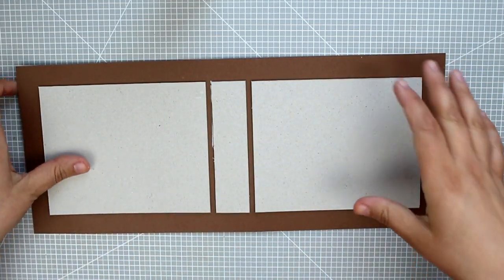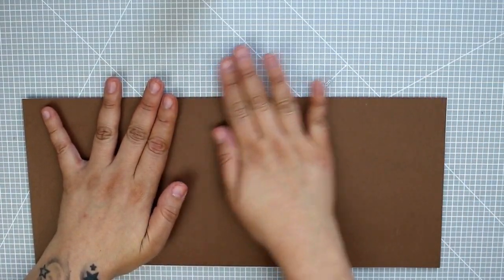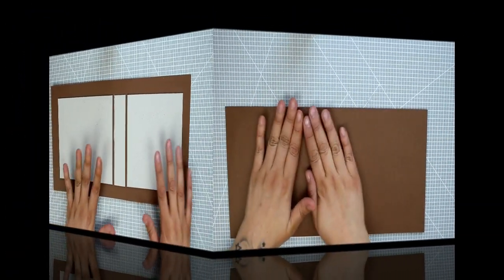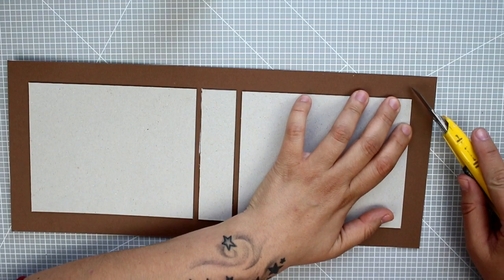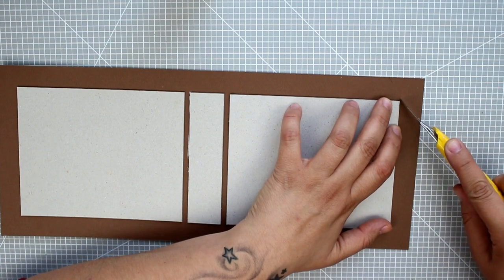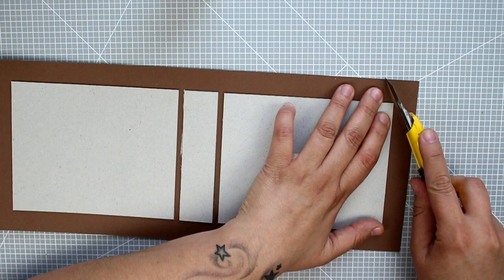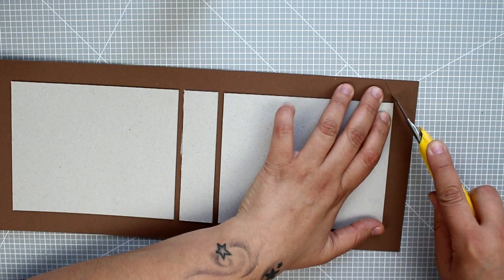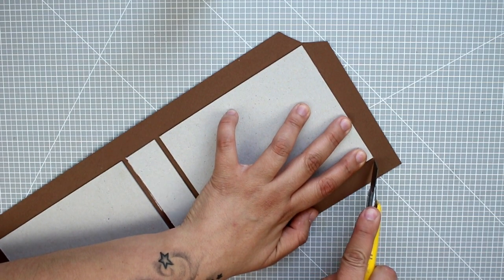Before folding it, we turn it over and press to make sure it's well glued. Now to fold it, we make a diagonal cut leaving a couple of millimeters between the corner and the cut. If you want, start here to make sure you leave the space you want.